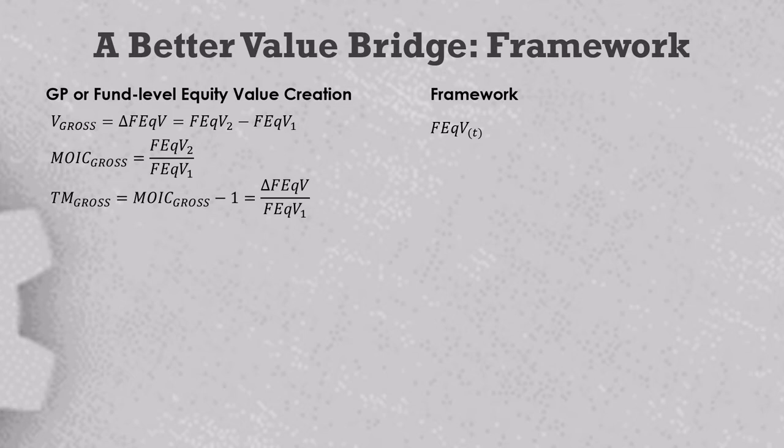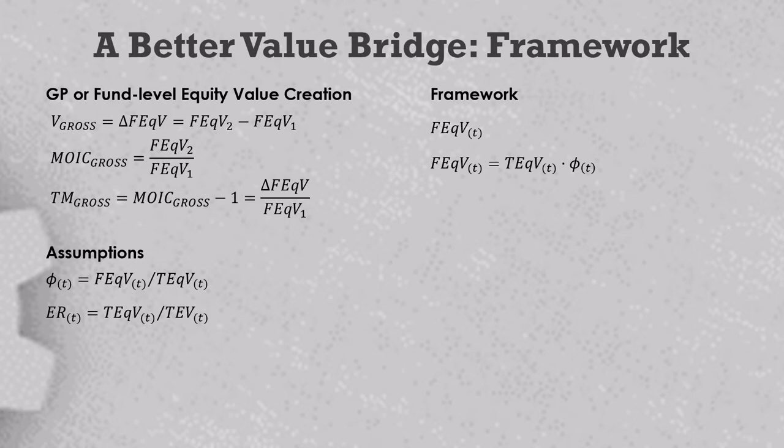The first thing that we need to do is incorporate the GP's ownership percentage into the model. Let us define phi at time t as the fund's equity value divided by the total shareholder equity value. This allows us to write fund equity value as the product of TEqV and phi. Then we can incorporate the leverage value driver into the model. Let us define the equity ratio ER at time t as total equity value divided by total enterprise value. This allows us to write fund equity value as the product of TEV, ER, and phi.